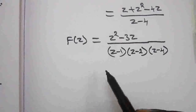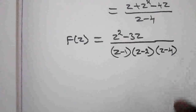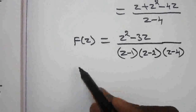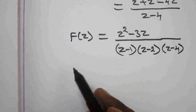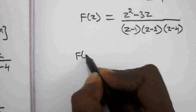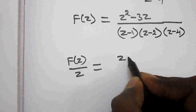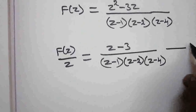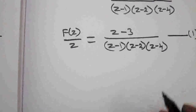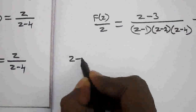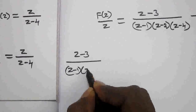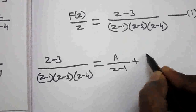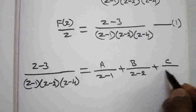Now applying inverse Z-transform by the partial fraction method. For partial fractions, divide both sides by z: F(z)/z equals (z−3) divided by (z−1)(z−2)(z−4). This is equation (1). We write the right hand side as A/(z−1) plus B/(z−2) plus C/(z−4).